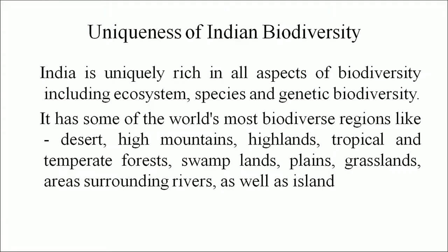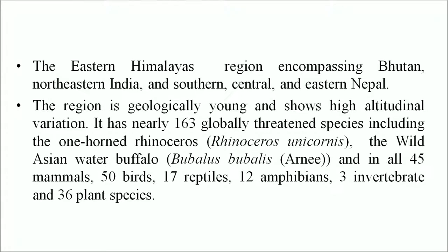India is uniquely rich in all aspects of biodiversity including ecosystem, species and genetic biodiversity. It has some of the world's most biodiverse regions: deserts, high mountains, highlands, tropical and temperate forests, swamplands, plains, grasslands, areas surrounding rivers, as well as islands. The eastern Himalayas region encompassing Bhutan, north-eastern India and southern, central and eastern Nepal is geologically young and shows high altitudinal variation. It has nearly 163 globally threatened species including the one-horned rhinoceros, the wild Asian water buffalo, and in all 45 mammals, 50 birds, 17 reptiles, 12 amphibians, 3 invertebrates and 36 plant species.